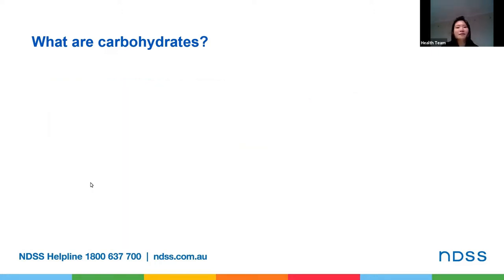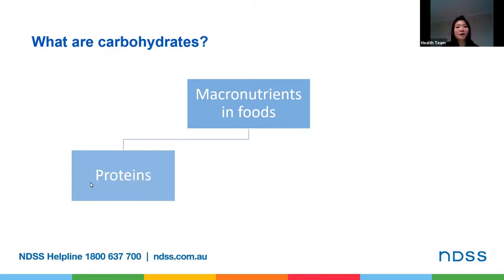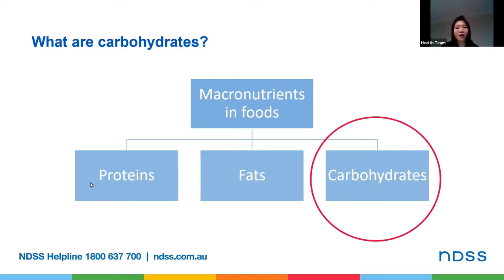Foods we eat contain macronutrients that provide energy and other nutrients the body needs. Most of the macronutrients in food fall into three major groups: proteins, fats, and carbohydrates. Out of the three, we'll be focusing on carbohydrates today. In the next slide, we'll talk about what actually happens in our body when we eat carbohydrate-rich foods.